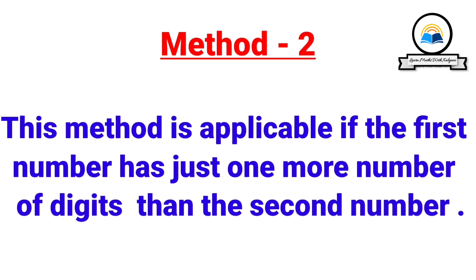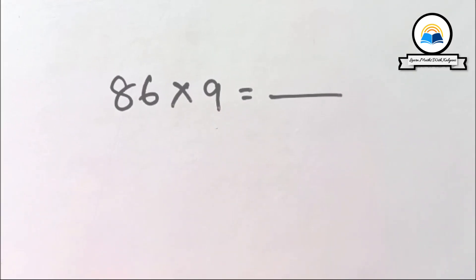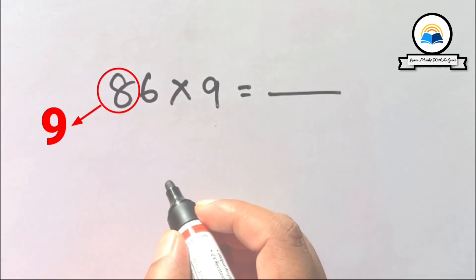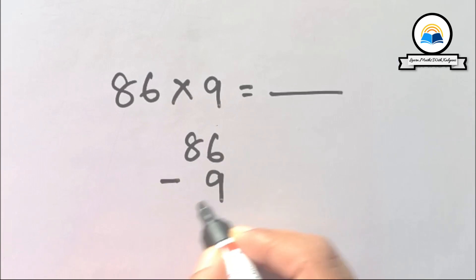Method two: This method is applicable if the first number has just one more number of digits than the second number. For example, 86 times 9. Here, successor of 8 is 9, so subtract 9 from 86: 86 minus 9 equals 77.